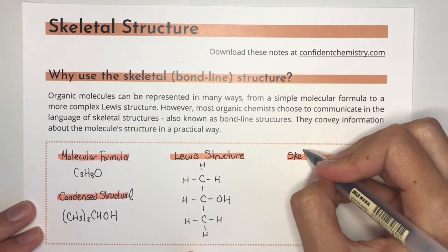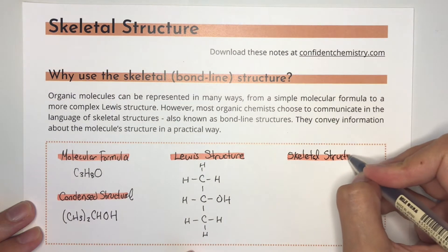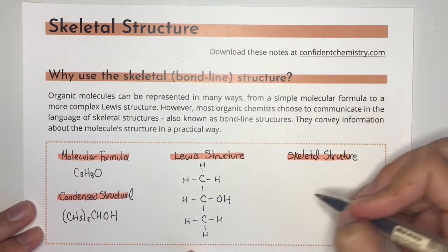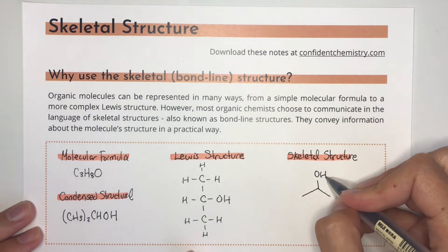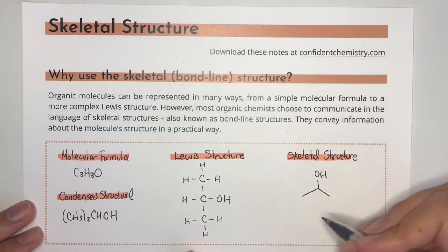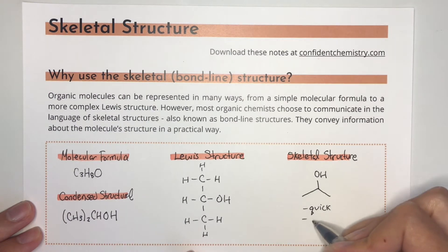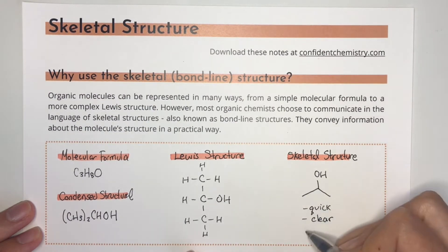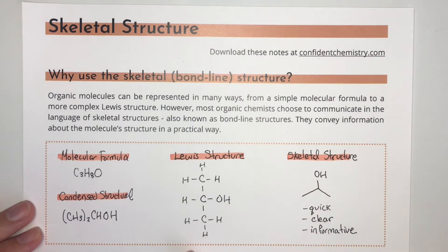This brings us to the skeletal structure — you might also see this called the bond line structure or bond line drawings. For this type of drawing, carbon atoms are represented by points on a line, and only the functional groups like the OH group are added to the carbon skeleton. It is quick to draw, very clear and easy to read, and it contains all the information we need about the atoms in the molecule and how they're connected.